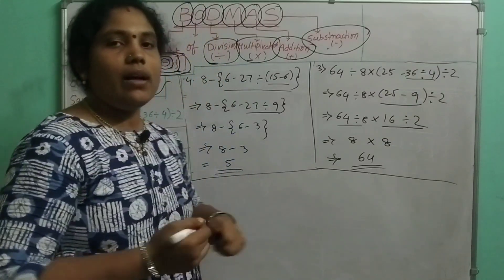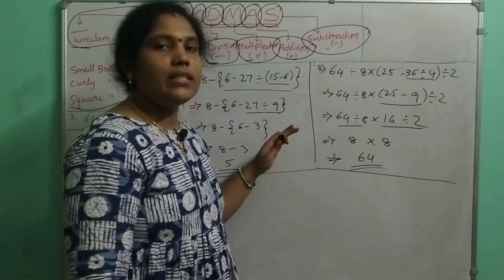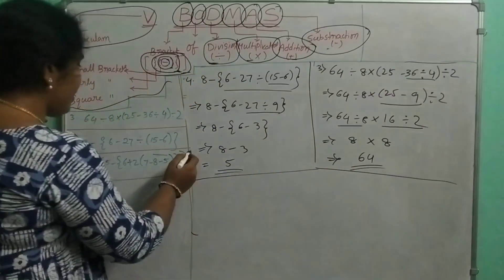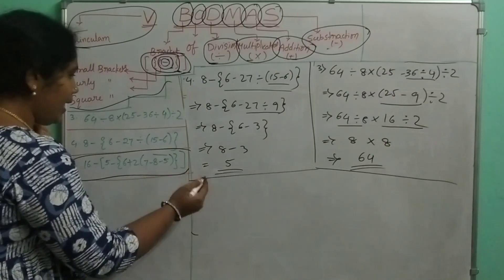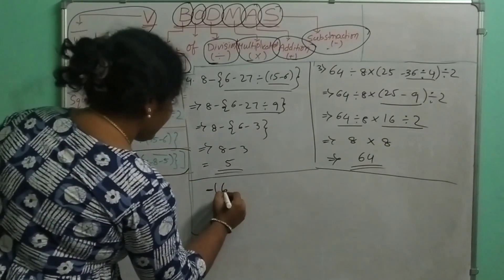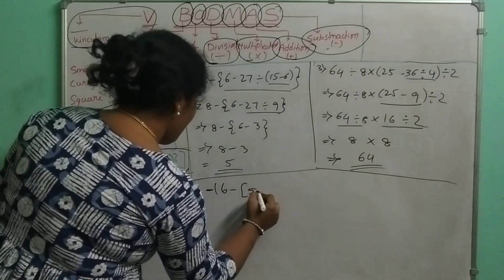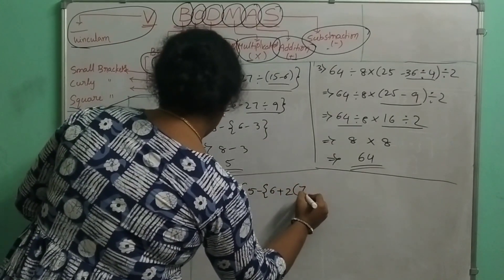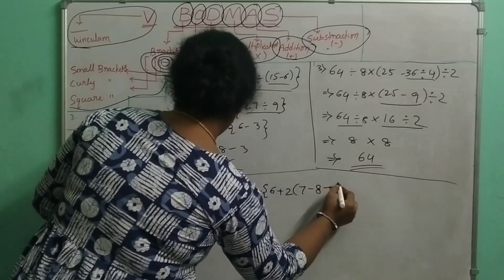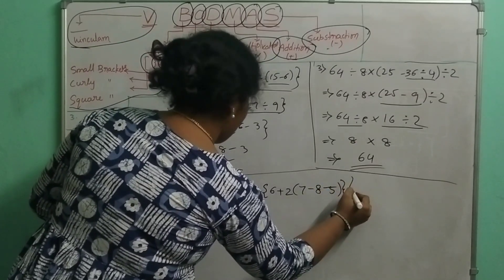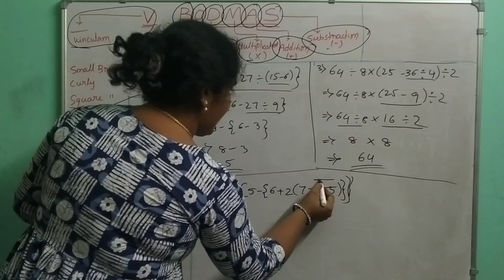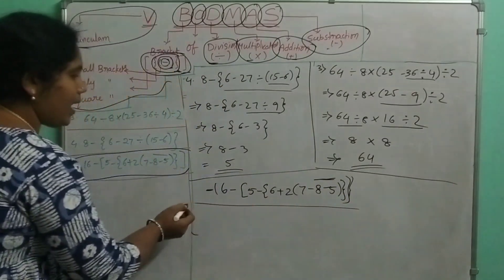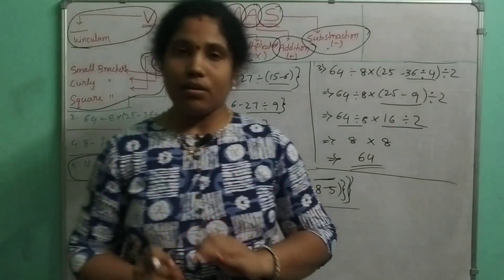If you want to practice, here is an example for you. Please write your answer in the comments section. The question is: 16 minus [5 minus (6 plus 2)] [7 minus (8 minus 5)]. Please comment your answer in the comments section.